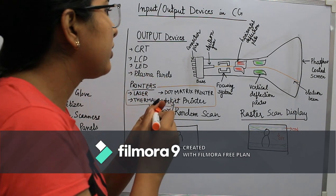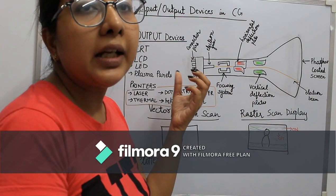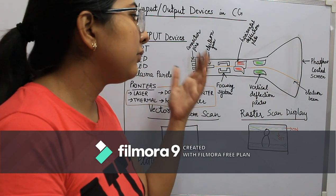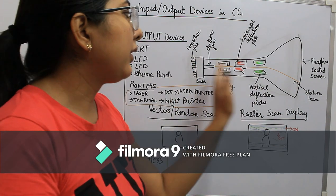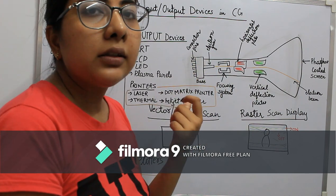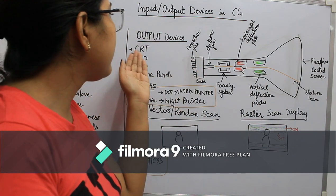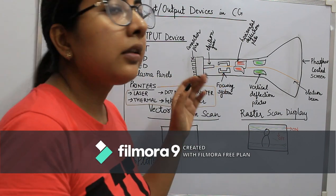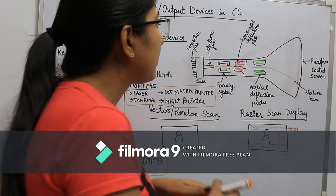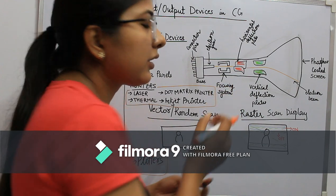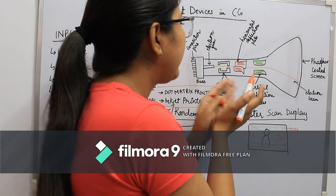Now let's talk about CRT and how it works. This is the basic structure of CRT — these are the connectors you see at the back of your monitor, and the base protects all the inner structures. There is an electron gun, also called the cathode gun, which generates cathode rays — that's why CRT stands for Cathode Ray Tube. This ray is simulated throughout to plot over the screen. Using the focusing system, we focus where this ray will go — upside, downside — and the path of the ray is decided.